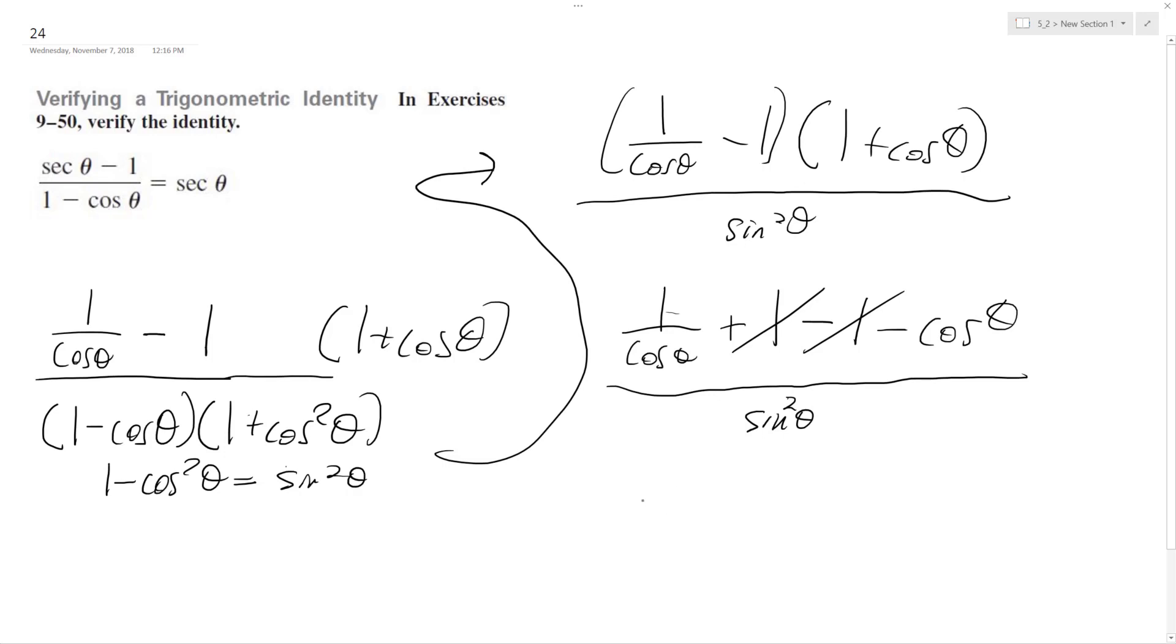So what I'm left with here is 1 minus cosine squared theta. Because what I did is I combined these with a common denominator.